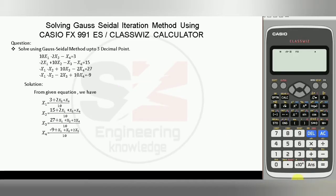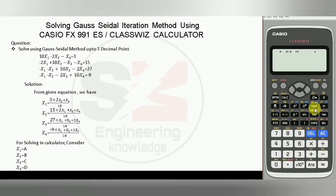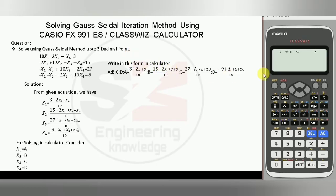For the calculation in the calculator, we have to consider the variables x1, x2, x3, and x4 as a, b, c, and d respectively. After this, we have to write the expressions in the calculator in this form, representing a, b, c, and d in terms of x1, x2, x3, and x4 to solve this equation in a minute with a single expression.